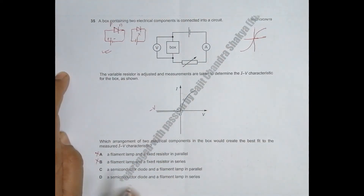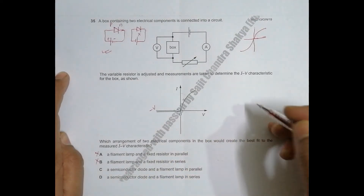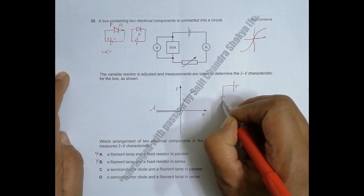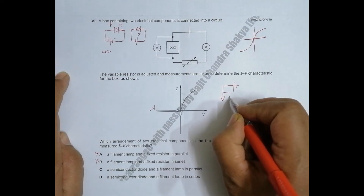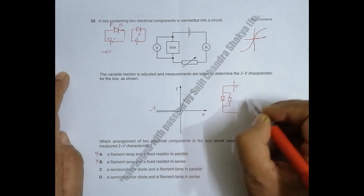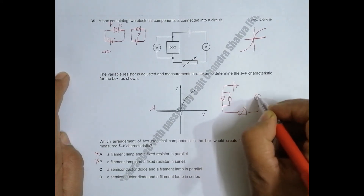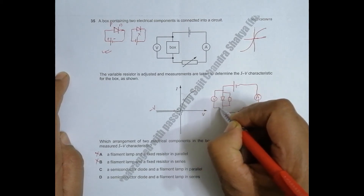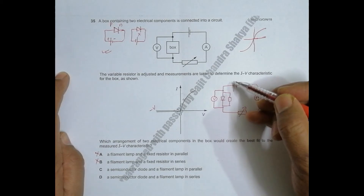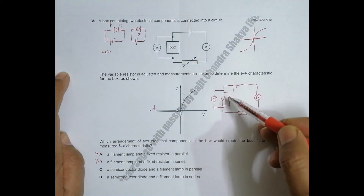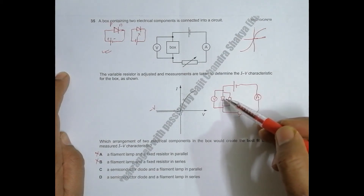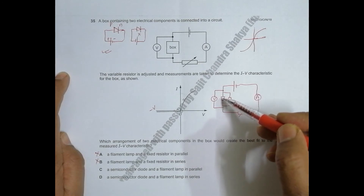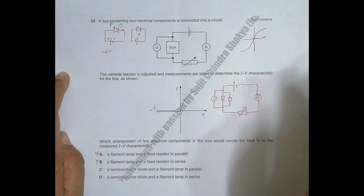Now to decide whether the semiconductor diode should be in series or parallel — if we have a semiconductor diode in parallel with a resistor, with a voltmeter connected, when current flows in the forward direction it flows through both the diode and the resistor. This causes a straight-line graph initially for the resistor, since the diode does not conduct until its threshold voltage is reached.